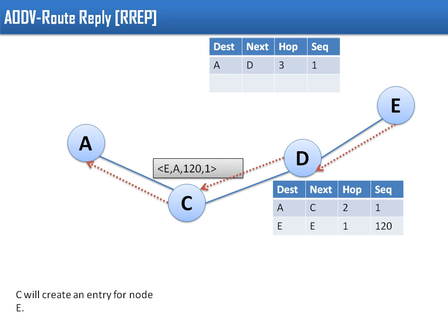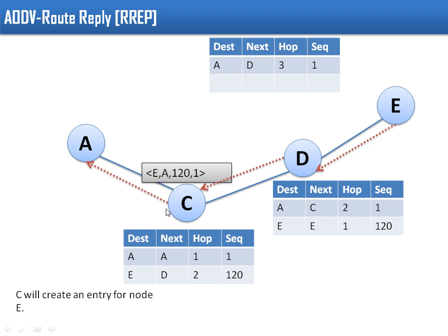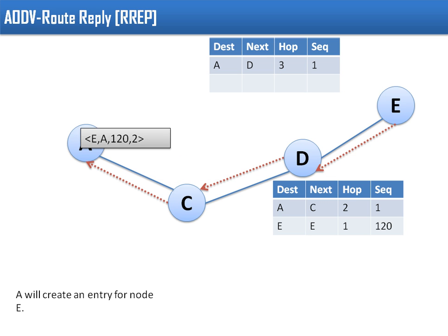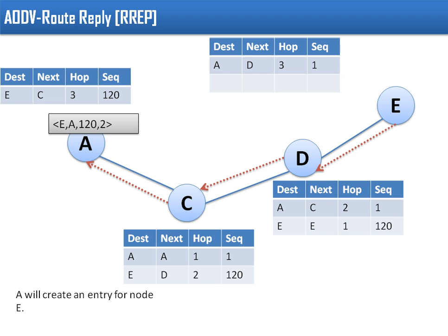D increments the hop count and sends the RREP to C. C sees this packet coming from E via D, so it creates a routing table entry: to reach E, forward packets to D, hop count is 2, sequence number is 120. Finally, this packet is sent to A, and A creates its own entry. Now every node has updated its routing table with information about node E. When A sends its data, the data packet does not carry any route information. Instead, every node consults its own routing table upon receiving a data packet and forwards it accordingly.